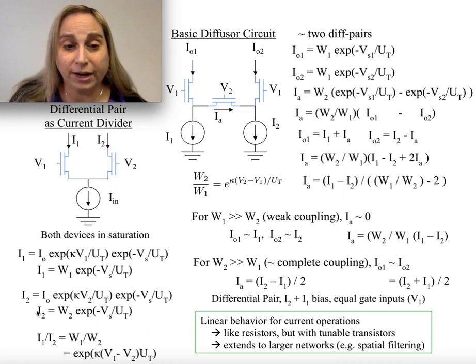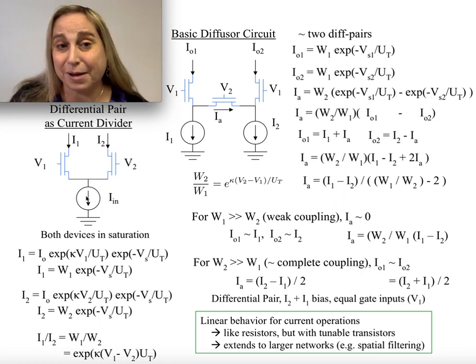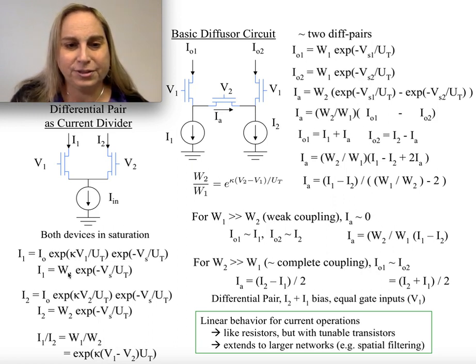Interestingly enough, for I2, I get something that's that W2, again, related to that middle node, Vs. Interesting thing happens. Divide I1 and I2. What do I get? Well, that turns out to be W1 over W2. The Vs's cancel out.